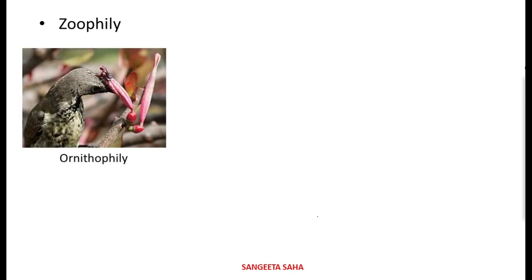In zoophily there are different types of agents: it can be human beings, bats, or birds. The first one we are going to learn here is ornithophily, where the pollinating agent is a bird and the flowers are known as ornithophilous flowers. These flowers are basically scentless, bigger in size, and brightly colored so that birds get attracted to them easily. Nectar is readily available, and the pollen is very sticky so that it can adhere to the body of the bird.